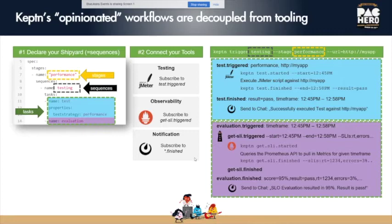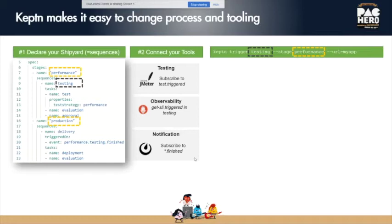The Lighthouse sends back an 'evaluation.finished' event which can be used by your chat integration. On the left you have a process definition, on the right your capabilities and tools — everything is event-driven. You can have one or multiple tools subscribe to the same events. Making changes is easy: I can introduce a second stage called production, replace JMeter with Neotys, and add Dynatrace as my monitoring tool in production. Dynatrace then handles all SLI events for that particular stage.